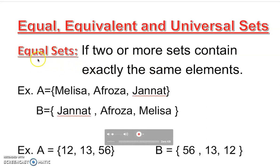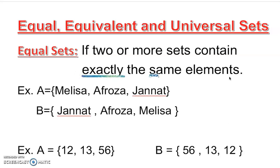Let's work on equal sets. If two or more sets contain exactly the same elements — I'm going to underline 'exactly' and 'same elements.' 'Exactly' means it should match perfectly, not only in appearance but also in exact value. In terms of number, one dollar is equal to one dollar — that is exact. Half a dollar is equal to 50 cents — that is also exact.